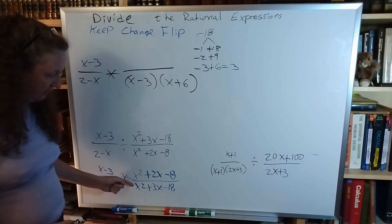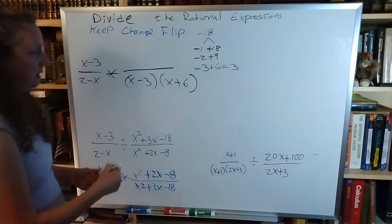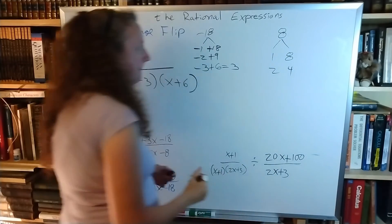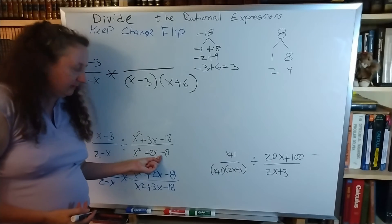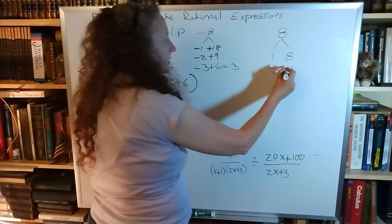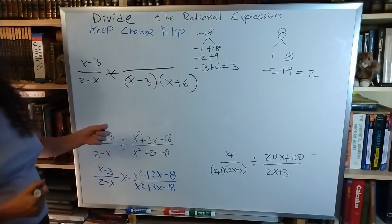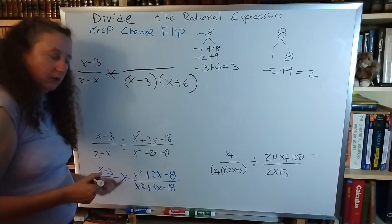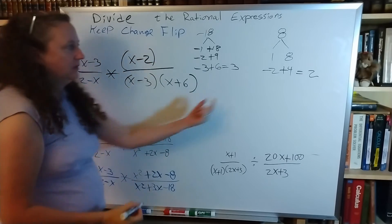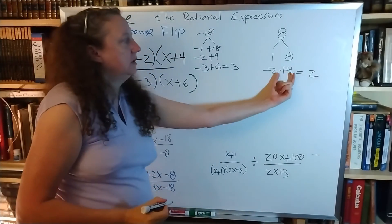For the other trinomial, x squared plus 2x minus 8: we have 8 — could be 1 and 8, or 2 and 4. It's negative so signs are different; b is positive so the larger number is positive. a equals 1 so I use my shortcut. The answer factors as x minus 2 times x plus 4.